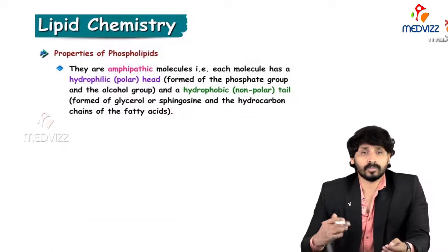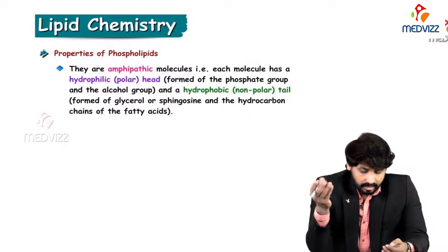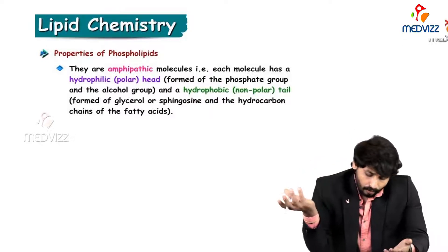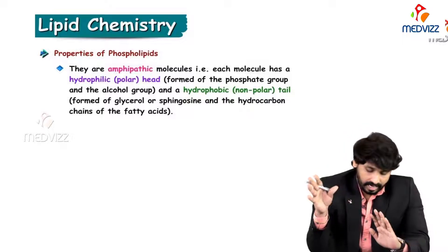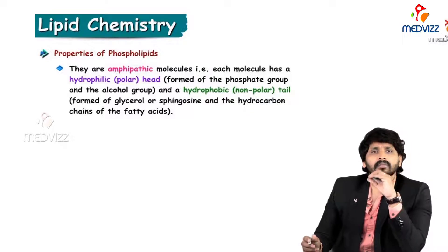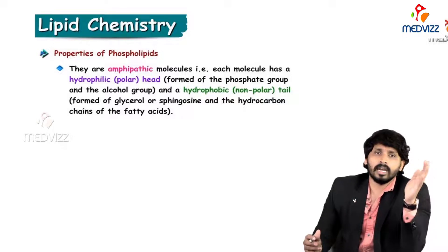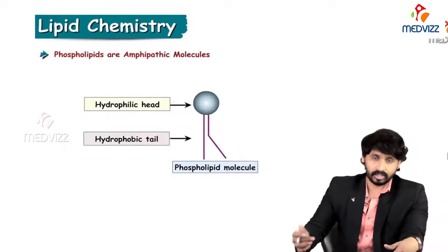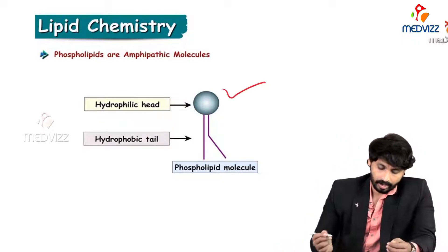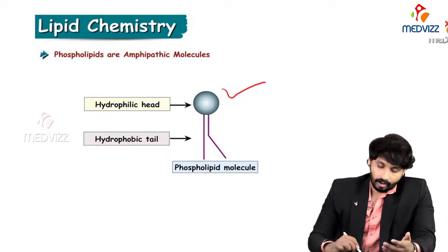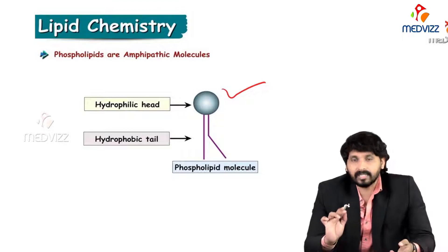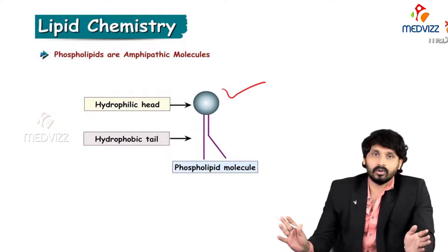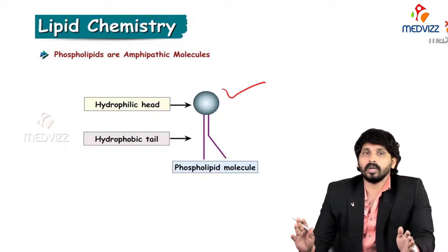Regarding properties of phospholipids: they are amphipathic molecules, meaning each molecule has both a hydrophilic and a hydrophobic component — a hydrophilic head and a hydrophobic tail — and they all have an elongated hydrocarbon side chain. Phospholipid molecules are found in the cell membrane lipid bilayer. The cell membrane is made up of a lipid bilayer, and the basis for this lipid bilayer is phospholipid. Without phospholipid, there is no cell membrane.